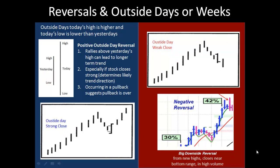Many new traders are unfamiliar with reversals and outside days. An outside day is when today's high is higher and today's low is lower than yesterday's. So if this was yesterday's price range, here's today's price range — it's outside of the range of the prior day. You can have positive outside days and negative outside days. When it rallies above yesterday's high and you have a strong close to the upside, this can be a very positive sign — it can often lead to a longer-term trend. If it's happening while a pullback is occurring, it can suggest that the pullback is coming to an end. Notice the strong close.